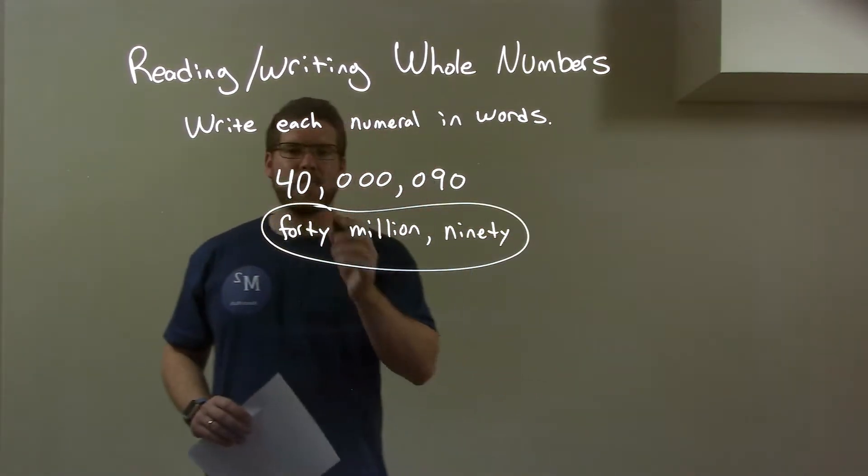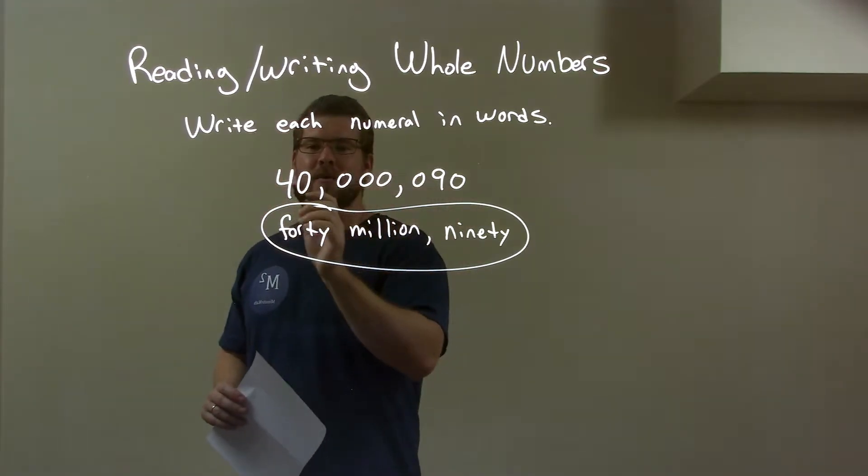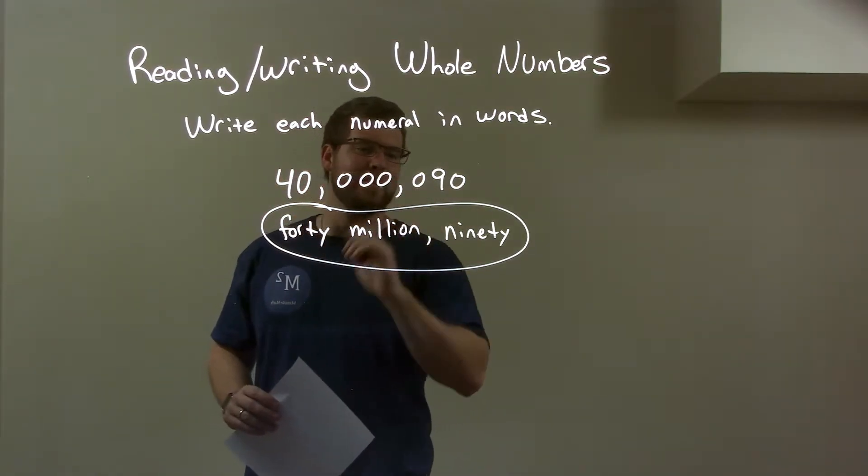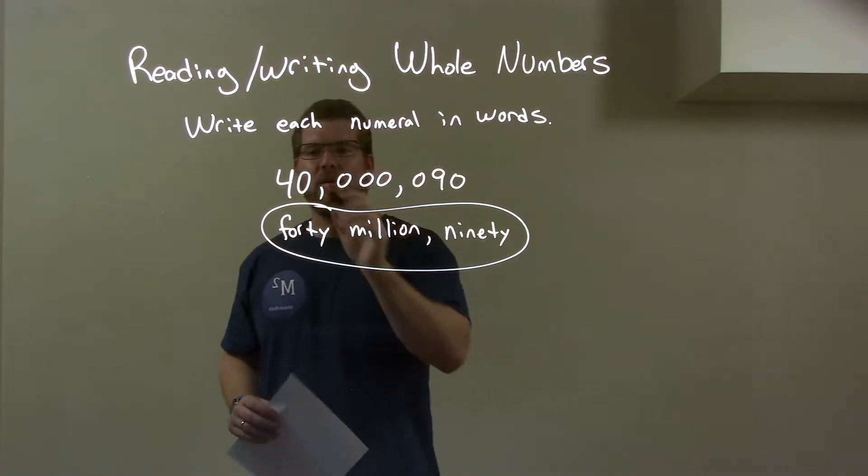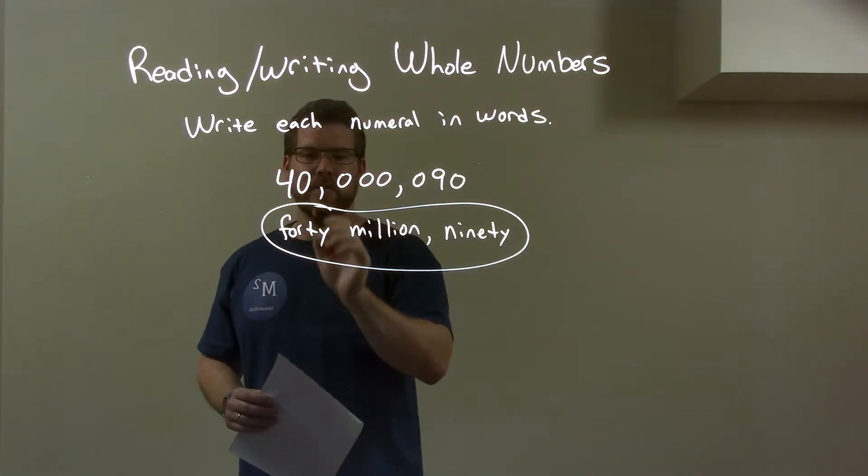So, quick recap. We're given this number up here with 0, 0, 0, 0, 0, and 9, 0. Well, right here, that's 40, right? So that's 40.